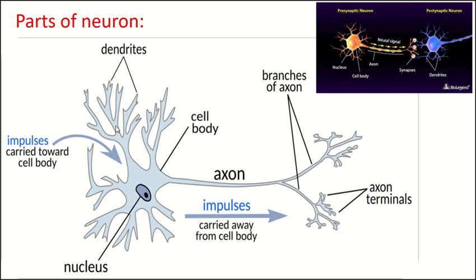The dendrites are extensions from the cell body that receive information from other axons. As you can see, the message passes from the axon terminals of axon 1 to the dendrites of axon 2. The third part is the axon, which transmits the nervous message from the cell body to the axon terminals. Finally, the axon terminals are located at the end of the neuron and are responsible for sending the signal to other neurons.